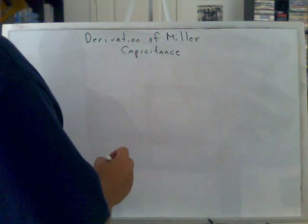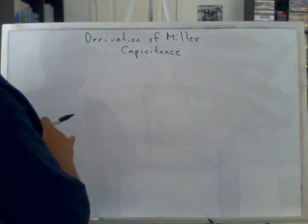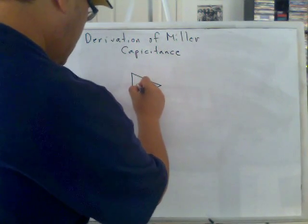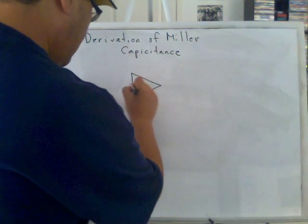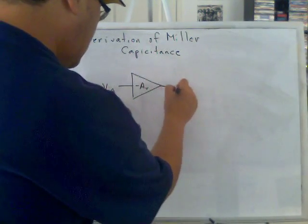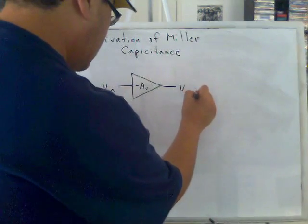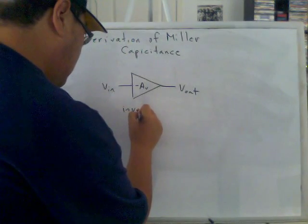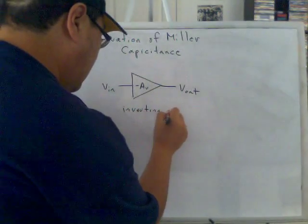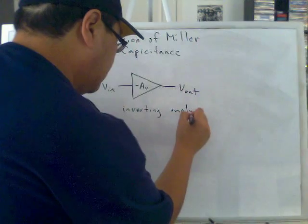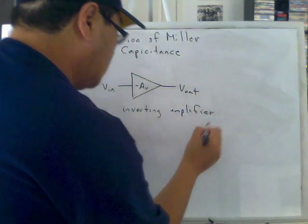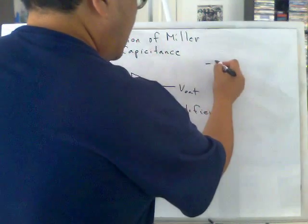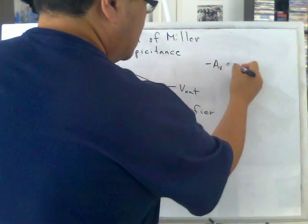Before we discuss Miller capacitance, I'm going to design an amplifier with negative Av. This is your V in, and this is your V out. This is an inverting amplifier. Let's make an example where negative Av equals negative 5.